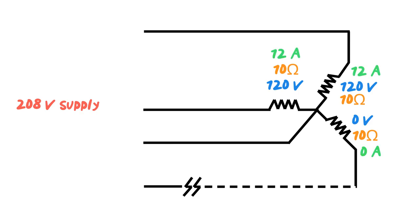Which means 120 divided by 10 gets us 12 amps, that gets us 12 amps there, and on this side here we will have 0 amps.